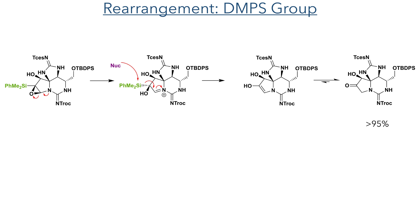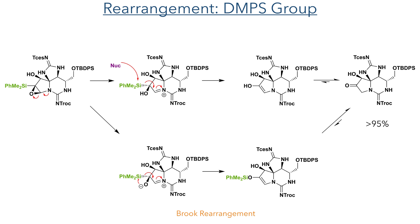However, in the compound bearing the dimethylphenylsilyl group, a different reaction occurred. The authors proposed two possible mechanisms. In the first, the epoxide opens as before, a nucleophile attacks the silyl group, and an enol is formed which tautomerises to the more stable ketone. Another possible mechanism is a Brook rearrangement, where the oxygen directly attacks the silyl group, forming a silyl enol ether, which can again undergo tautomerisation upon expulsion of the silyl group, forming the desired compound in greater than 95% yield.